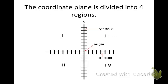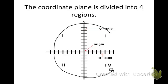The coordinate plane is divided into those four regions that we just labeled: region Roman numeral 1, Roman numeral 2, Roman numeral 3, and Roman numeral 4. We're going to have to memorize those. Remember, it goes 1, 2, 3, 4 in a counterclockwise way.